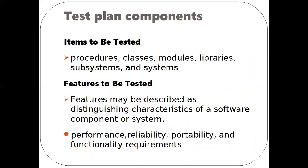The next component is items to be tested. This covers what entities there are, such as the name of the project and the version number of the project. These items also need to be tested. Items include procedures, tasks, methods, objects, libraries, and subsystems. These are the items to be tested.